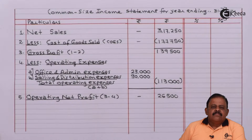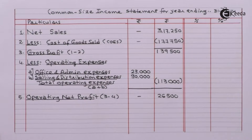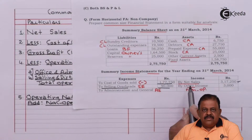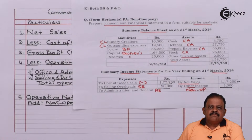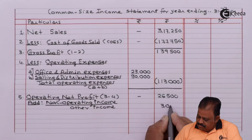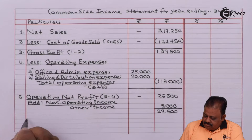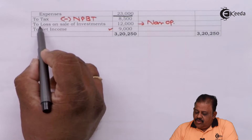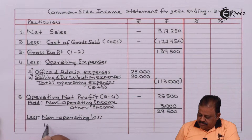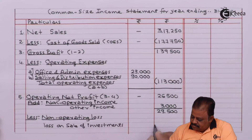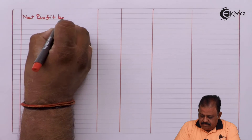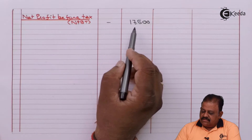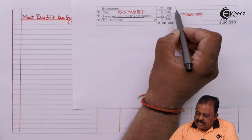Operating net profit is 26,500. To this we add non-operating income — other income of 3,000. We then deduct the non-operating loss: loss on sale of investments of 12,000. Net profit before tax is 17,500. Tax is 8,500.